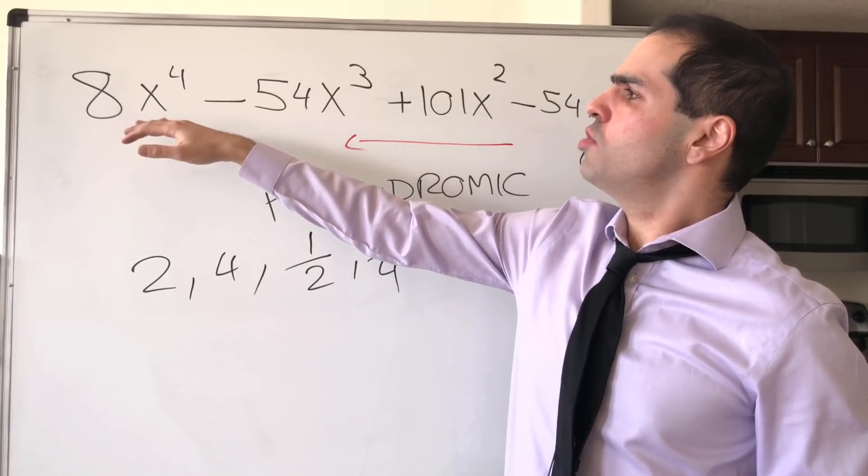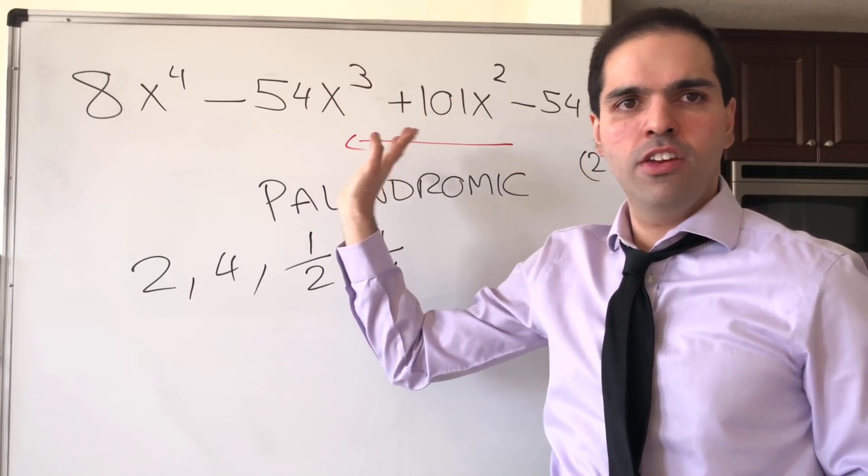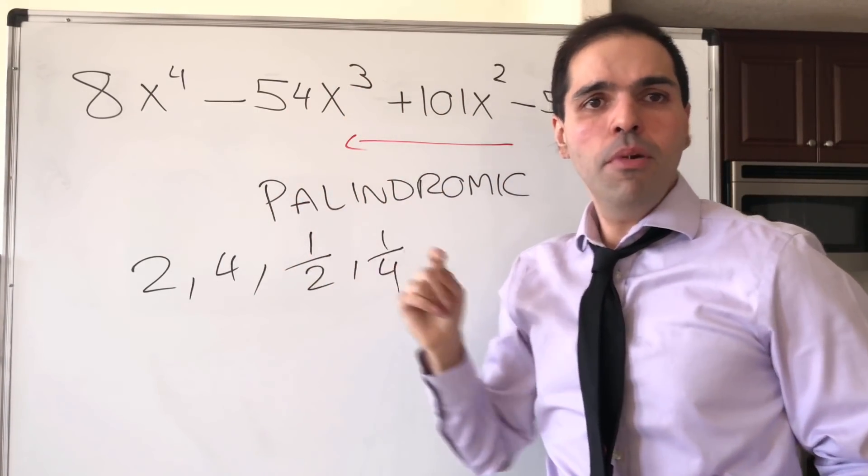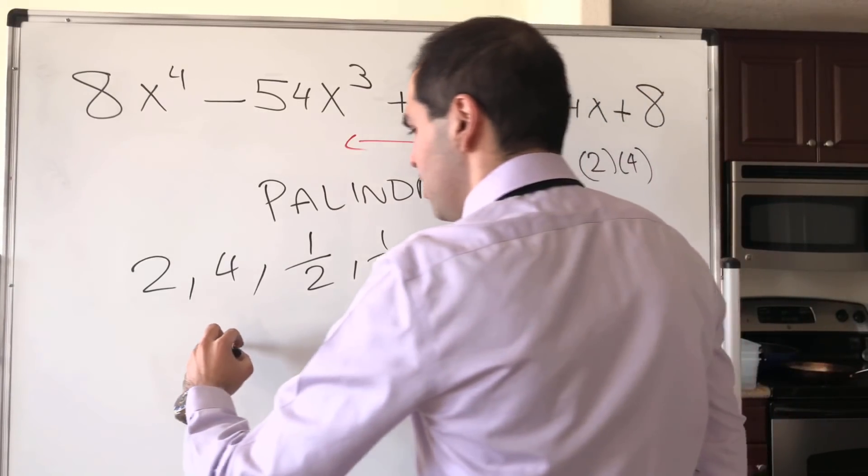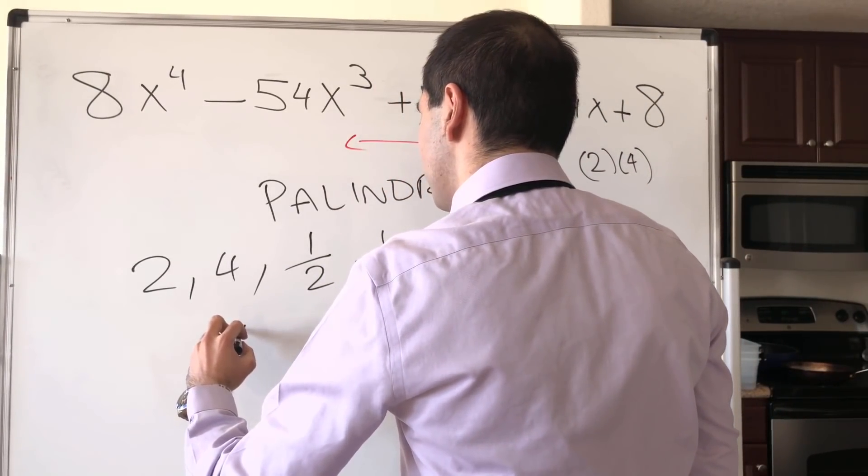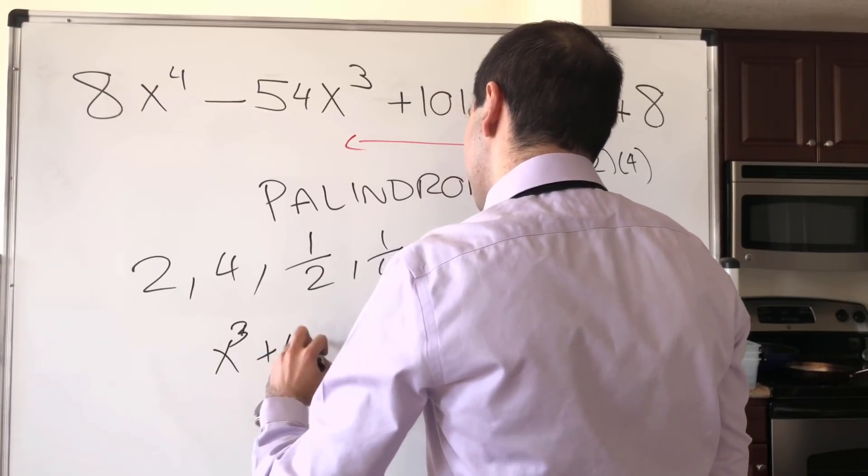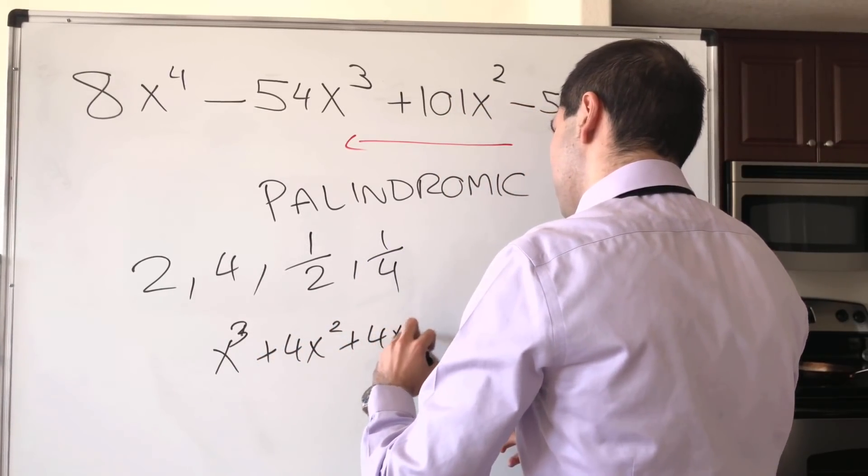And don't quote me on this, but I believe a palindromic polynomial of odd degree must have root plus or minus 1. So for instance, I believe x cubed plus 4x squared plus 4x plus 1,